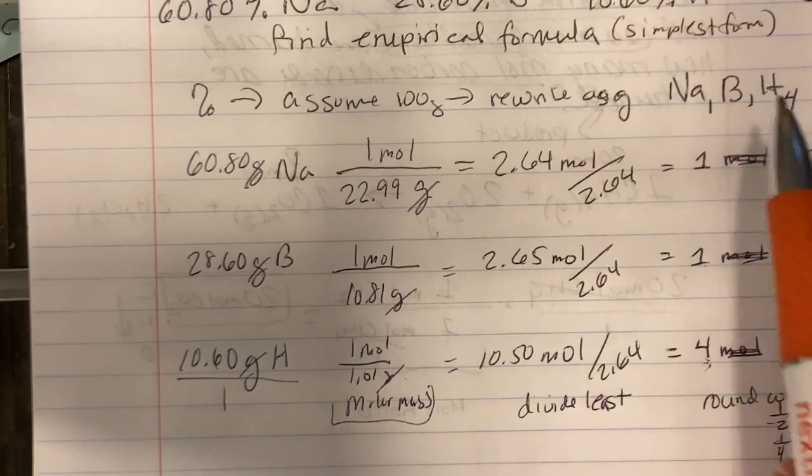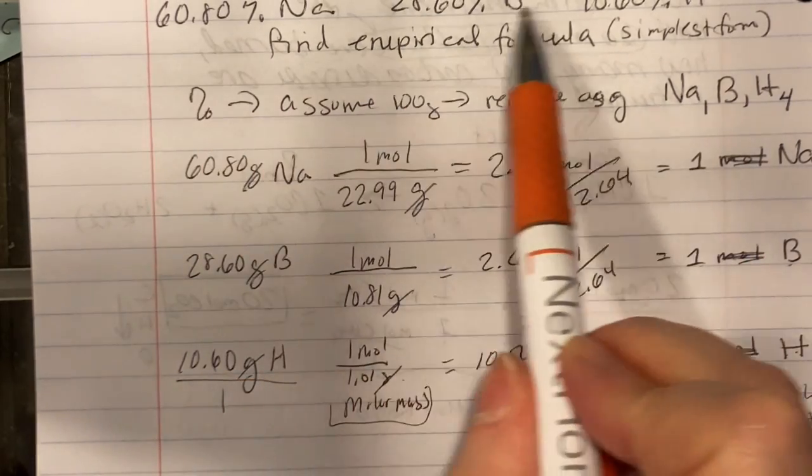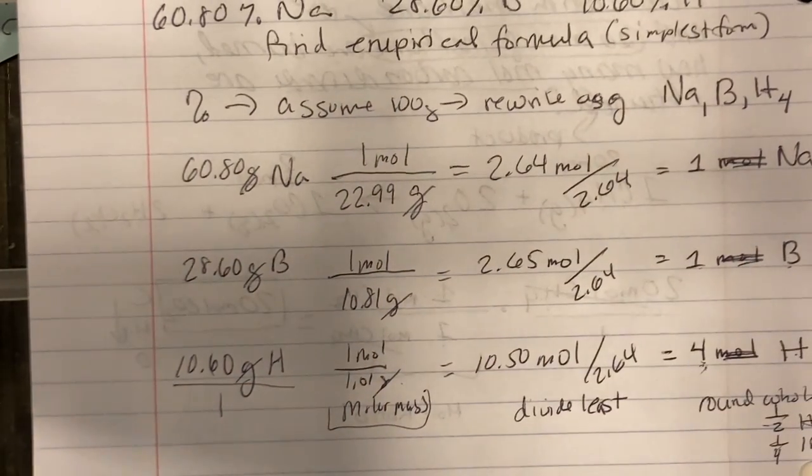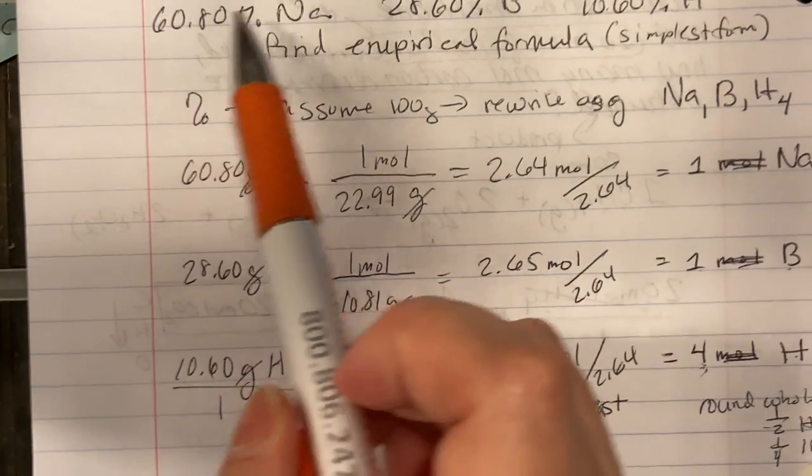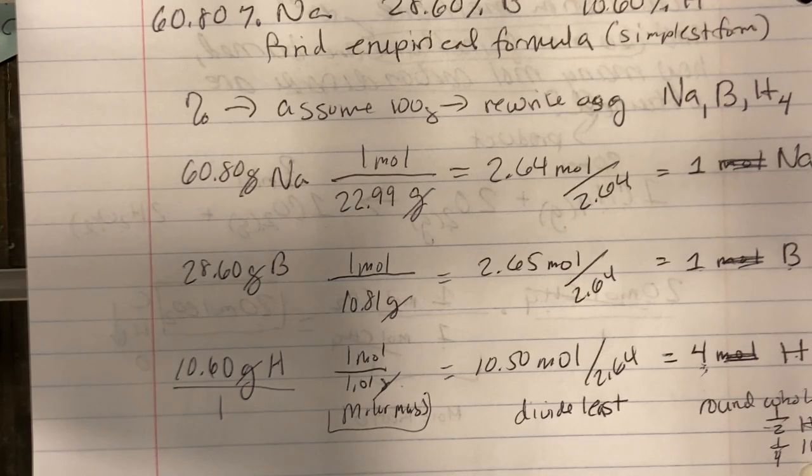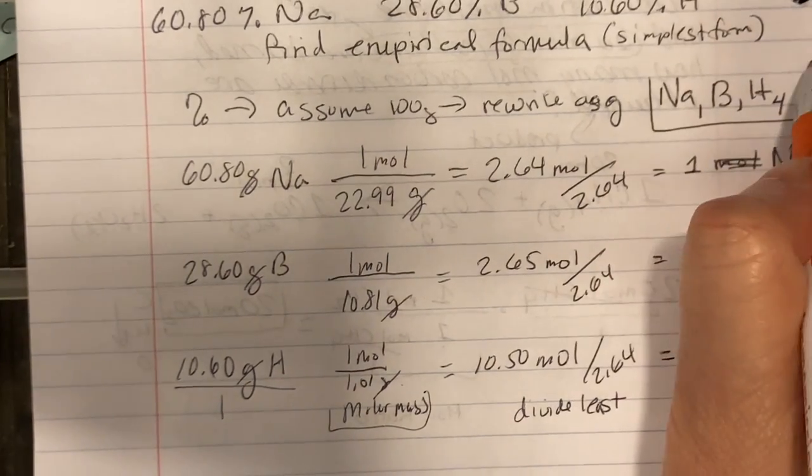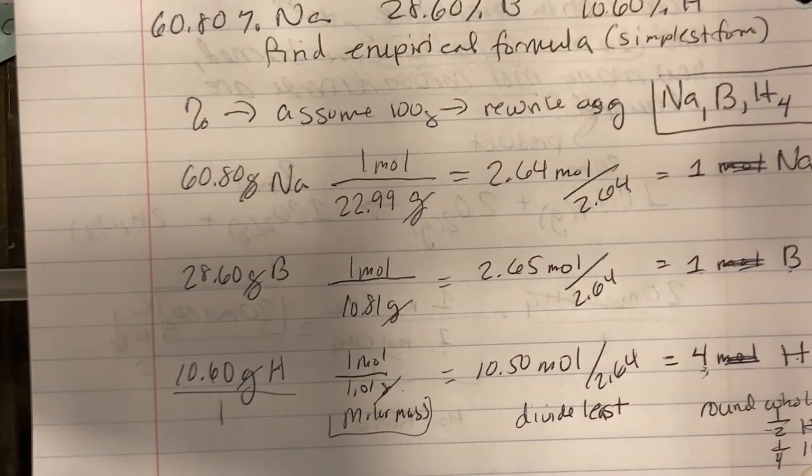And if you're in general chemistry, just rewrite it in the same order that they gave you your percent compositions for. If you are in honors chemistry, rewrite it in the same order that you found it in. In IB, write it in the order that you would find if you were converting this into a molecular formula. But NaBH4.